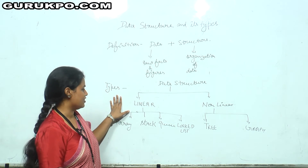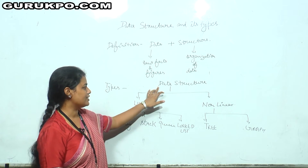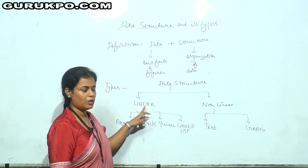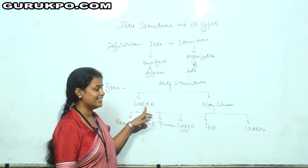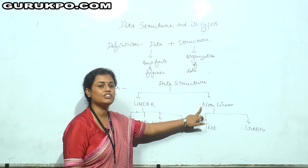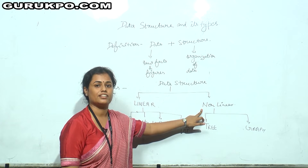Now, the types of data structure. Basically there are two types of data structure: first is linear data structure and another one is non-linear data structure.